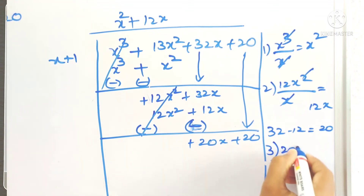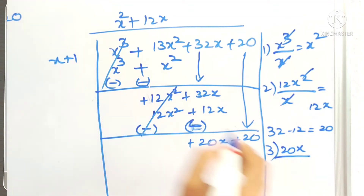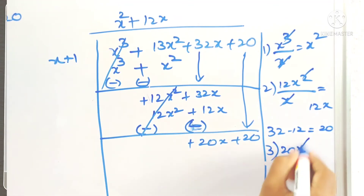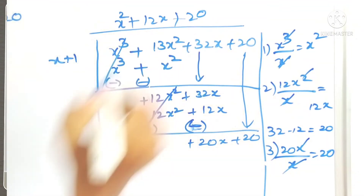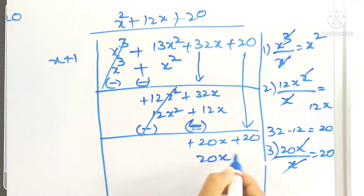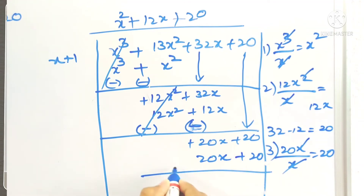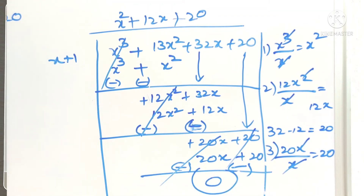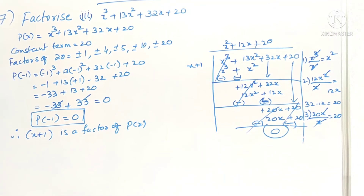For the third term in the quotient, divide 20x by x to get 20. Multiply 20 by (x + 1) to get 20x + 20. Subtract by changing signs — same numbers cancel — and the remainder is 0. So the quotient is x² + 12x + 20.